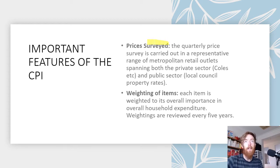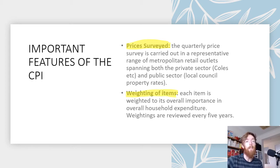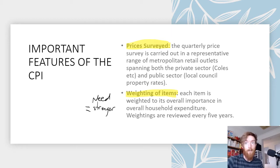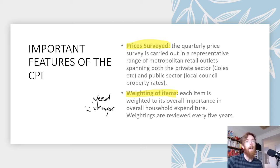The quarterly price survey is carried out across a representative range of metropolitan retail outlets spanning both the private sector — like supermarkets — and the public sector — like local council property rates. Items are then weighted based on their overall importance in household expenditure, and these weightings are reviewed every five years. Things like education, healthcare, and petrol are heavily weighted as needs, while luxury items receive smaller weightings.